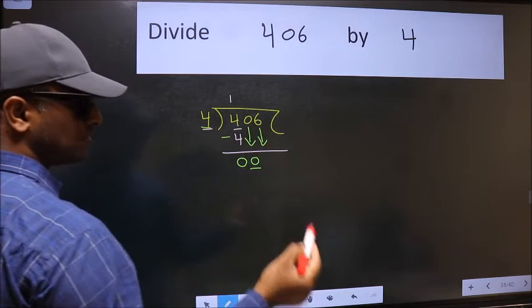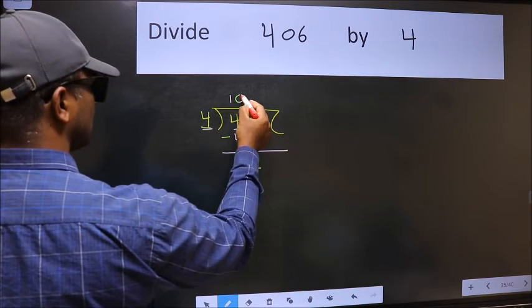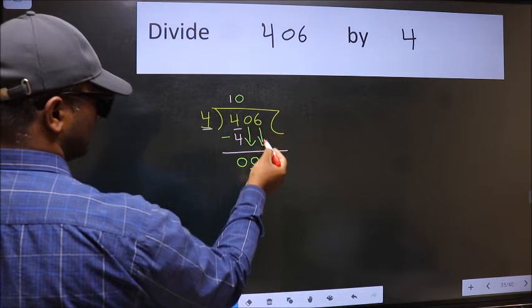And the rule to bring down the second number is we should put 0 here. Then only we can bring down this number.